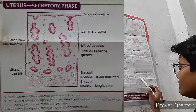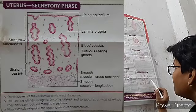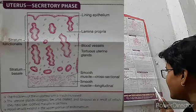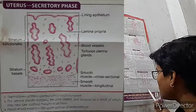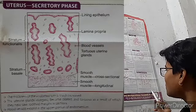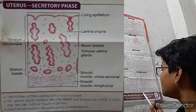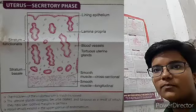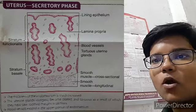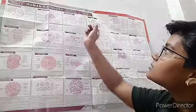Now the uterus in the secretory phase. Visible structures include stratum functionalis, stratum basalis, lining epithelium, lamina propria, blood vessels, tortuous uterine glands, smooth muscles in cross-section and longitudinal section. The thickness of the endometrium is much increased. The uterine glands elongate, become dilated and tortuous. The blood vessels extend into the upper portion of the endometrium. This concludes the human histology revision; histology slides are included in this video.